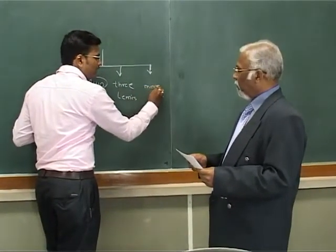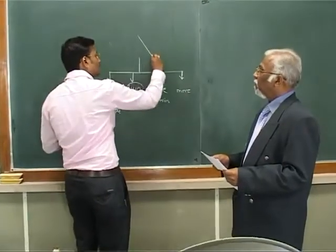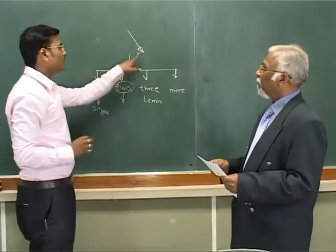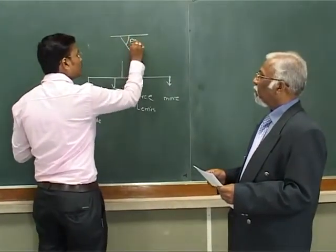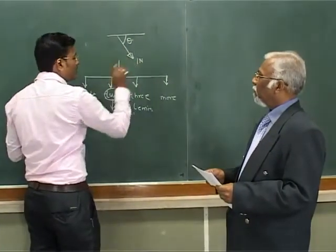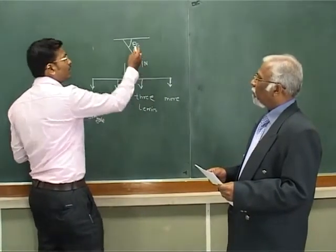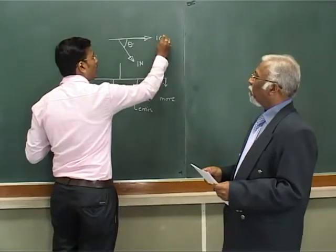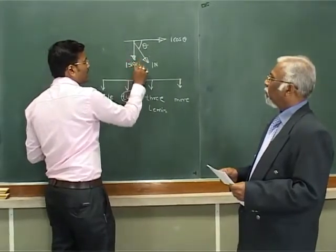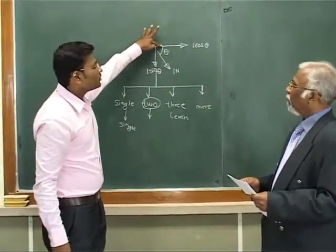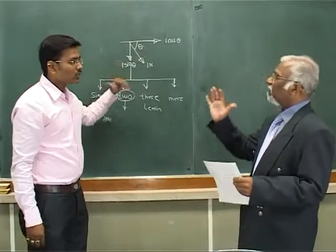If there exist more than three forces, then we have to resolve those forces into x and y components. For example, if this is a force — as we know, for defining force we need its point of application, magnitude, and direction. If theta is the direction and magnitude is, say, one Newton, then the horizontal component is one cos theta and the vertical component is one sine theta. The angle with respect to horizontal gives cos, and the other gives sin — so this is resolution of forces.